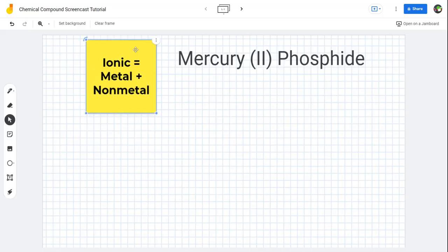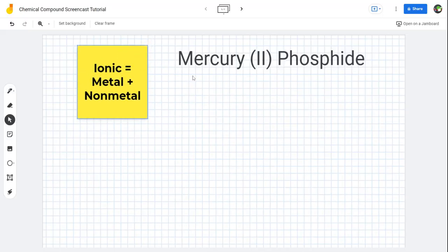Very important to know this because ionic compounds have to follow the rule of zero charge. We need to know the charges of each of the compounds so we know how many come together.